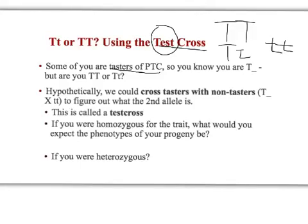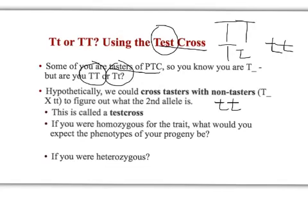Some of you in the class may be tasters of PTC, but if you're a taster you don't know if you're homozygous dominant or heterozygous. To figure out what you are, we can do a test cross: take an individual who can taste PTC and cross them with someone who is homozygous recessive, and by looking at the offspring we can figure out what their second allele is.